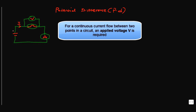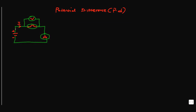The convention is that current flows from the positive terminal, so the electrons flow from the positive terminal to the negative terminal. A voltmeter is an instrument that takes voltage readings.